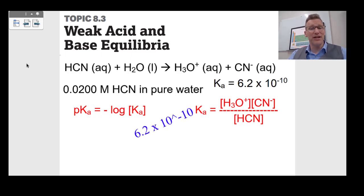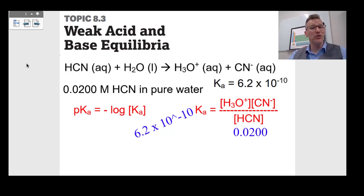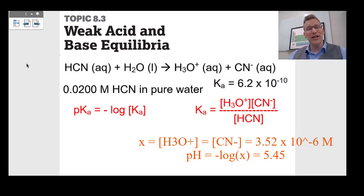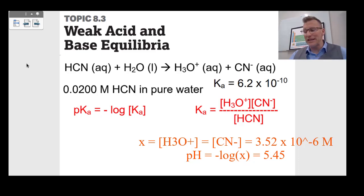If we have 0.0200 molar of HCN in pure water, the Ka is 6.2×10⁻¹⁰. The HCN stays roughly 0.0200 molar because it barely dissociates. It's a one-to-one ratio of H₃O+ to CN−, so we call that X and X. Solving for X gives 3.52×10⁻⁶ molar — that is the H₃O+ concentration. Taking the negative log gives a pH of 5.45.